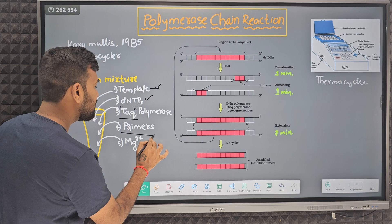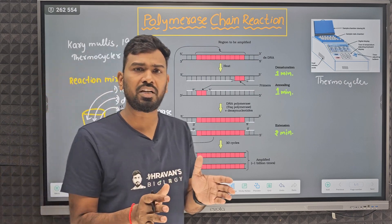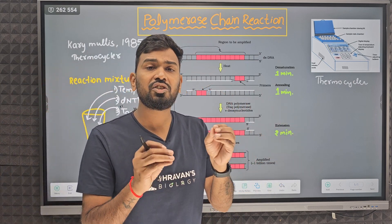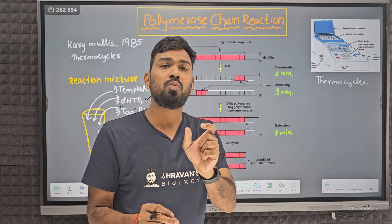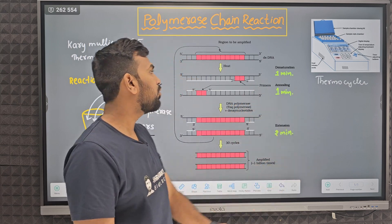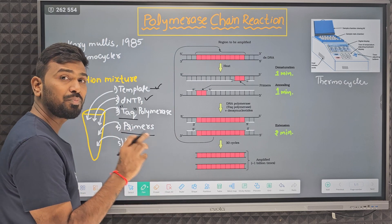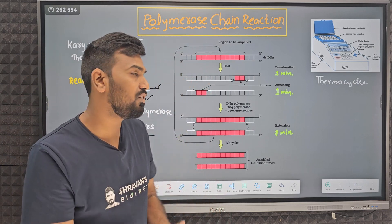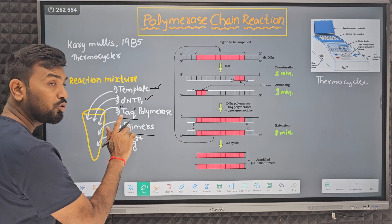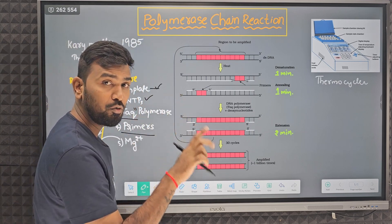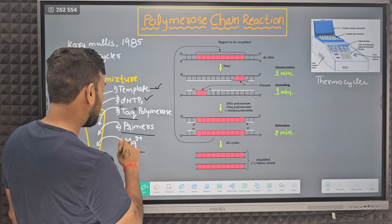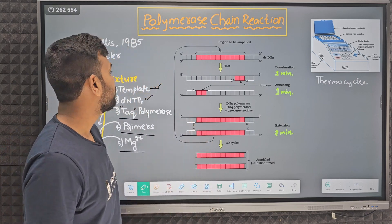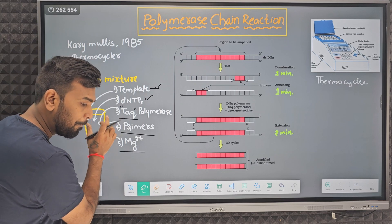The fourth component — we need primers. Every polymerase, whether human, plant, animal, or bacteria, requires a primer. Only then will DNA replication be possible, because polymerase cannot initiate replication on its own. Two types of primers are needed because we have two strands. Also add magnesium, as polymerase activity requires magnesium.